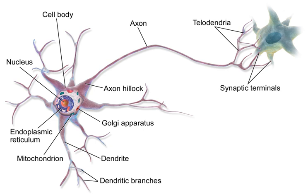Backpropagating action potentials cannot occur because after an action potential travels down a given segment of the axon, the M gates on voltage-gated sodium channels close, thus blocking any transient opening of the H gate from causing a change in the intracellular sodium ion concentration, and preventing the generation of an action potential back towards the cell body. In some cells, however, neural backpropagation does occur through the dendritic branching and may have important effects on synaptic plasticity and computation.